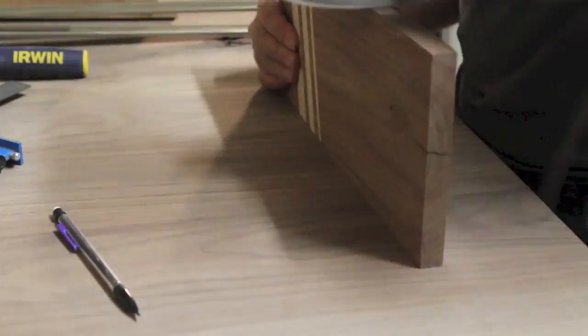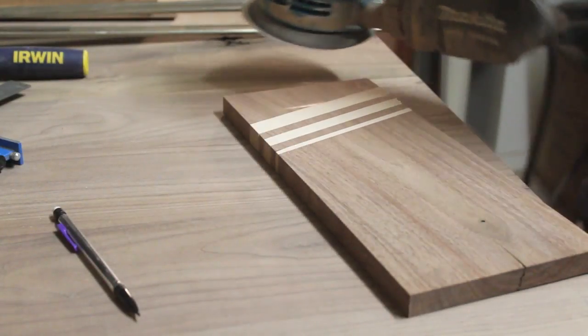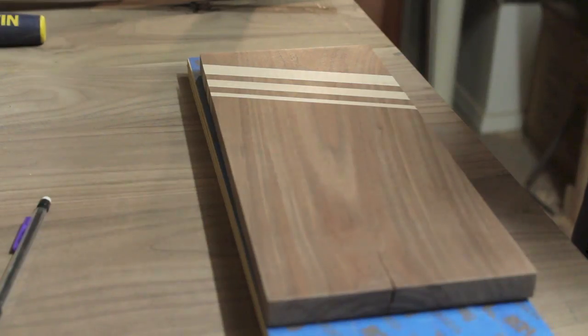I used the random orbital sander to sand up to 320 grit and then applied one coat of Minwax wipe-on polyurethane.